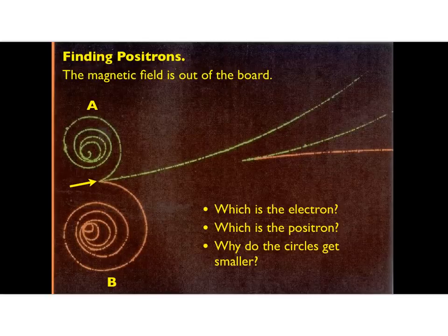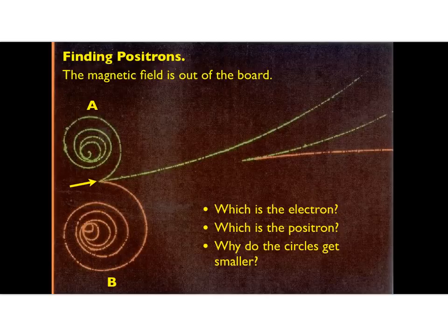Now let's talk about positrons. A positron is the antiparticle of an electron — an electron is negatively charged, a positron is positively charged with the same mass, but opposite on key properties like charge and lepton number. A gamma ray came in, struck a nucleus, and produced a positron and electron — that's something we talked about previously. The magnetic field in this picture is out of the board.